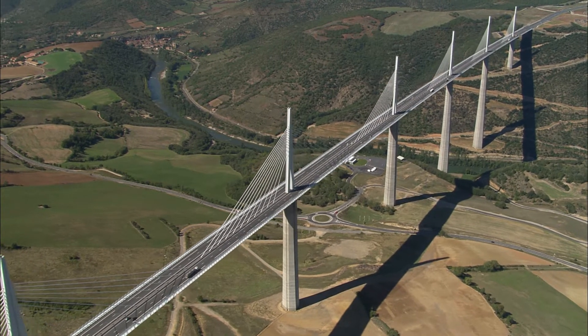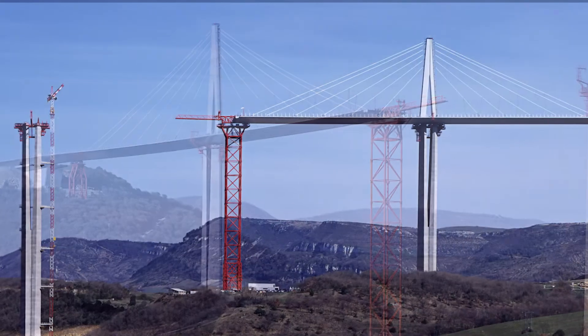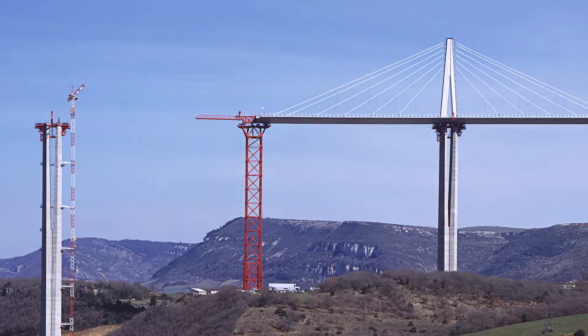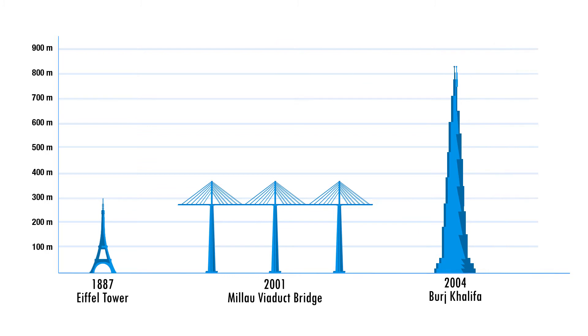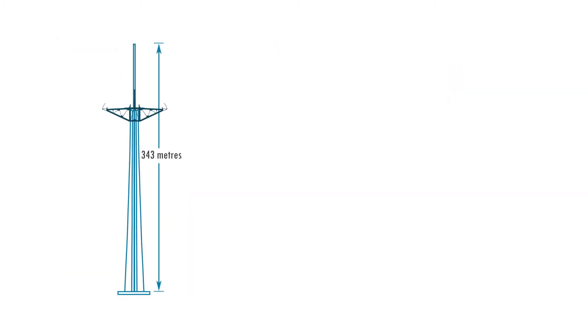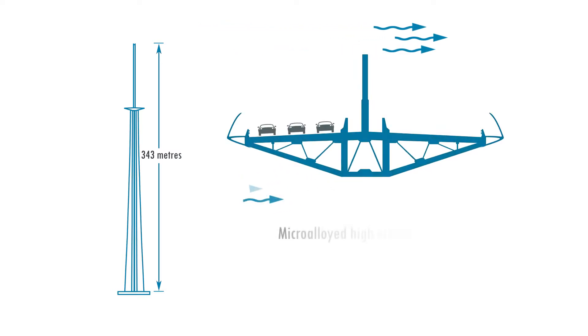The Millau Viaduct in France is a good example of high-strength steels which enabled the design and construction of the world's tallest bridge. A niobium-bearing high-strength steel was used to construct the deck of this box-girder bridge. Allowing the use of high-strength steels not only led to a reduction in weight but also allowed the height of the deck structure to be reduced, minimizing the effect of high winds to which this tall structure was exposed.